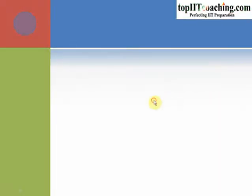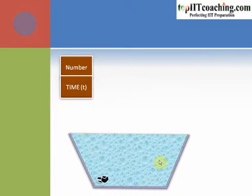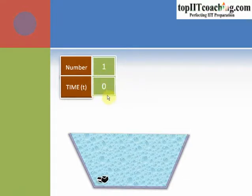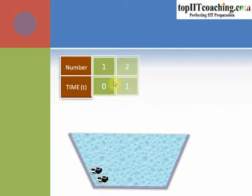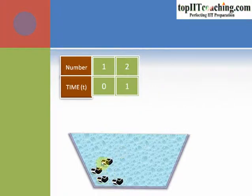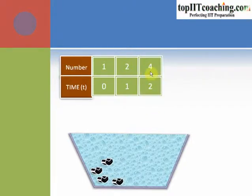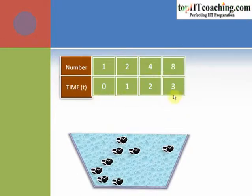Suppose we are working in a biotechnology lab and we have been given a trough with one bacteria cell. At t equal to 0, the number of cells equals 1. In the next hour, the number of cells becomes double, equal to 2 at t equal to 1. They double again to 4 at t equal to 2, then to 8 cells at t equal to 3 hours.